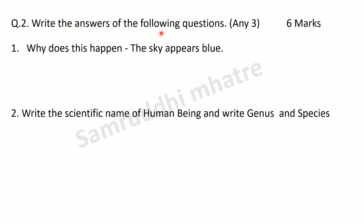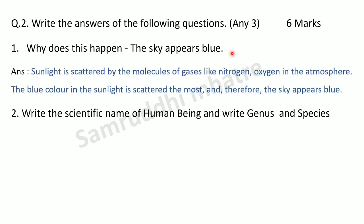Question number two: write the answer to the following questions — any three for six marks. First: why does this happen — the sky appears blue? Sunlight is scattered by the molecules of gases like nitrogen and oxygen in the atmosphere. The blue color in sunlight is scattered the most, and therefore the sky appears blue.